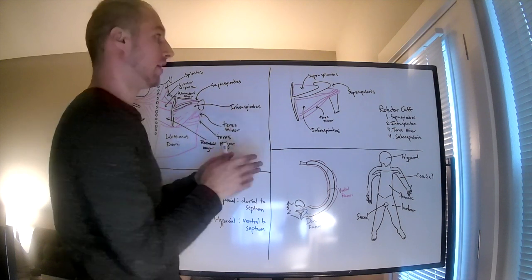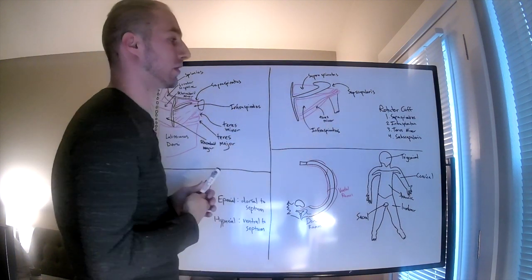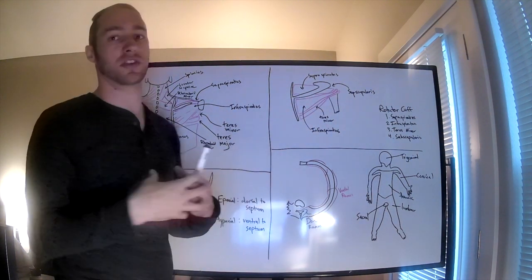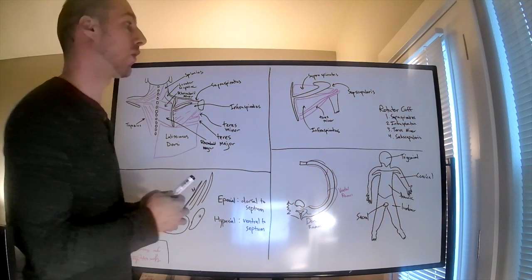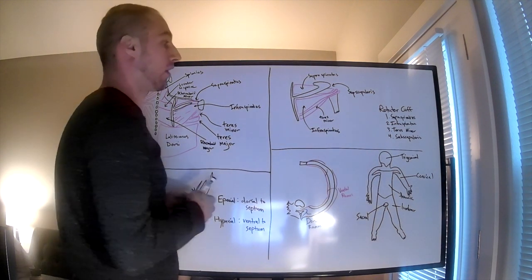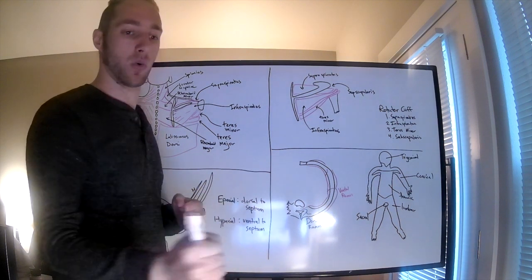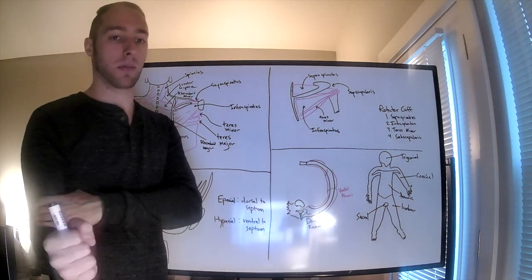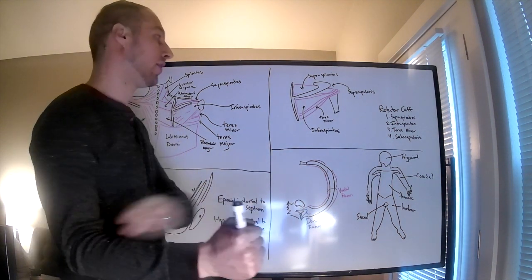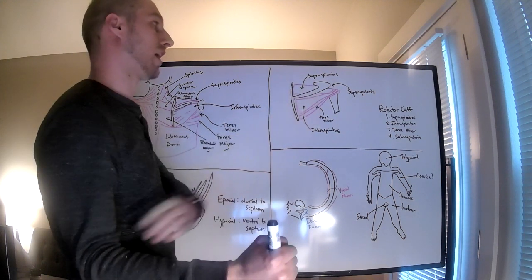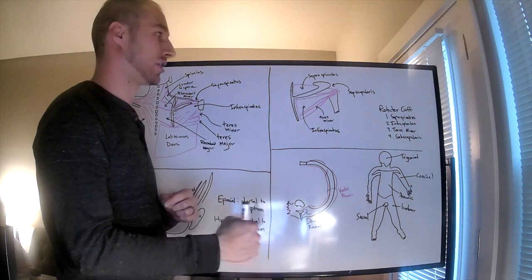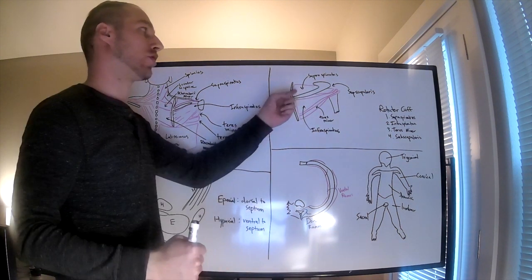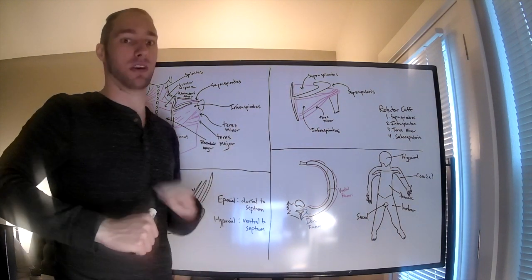All those are important for stabilizing the shoulder joint and for movement of the arm. The infraspinatus and teres minor will do abduction of the arm at the elbow. The subscapularis will do adduction of the arm at the elbow, and the supraspinatus will do abduction of the arm at the shoulder.